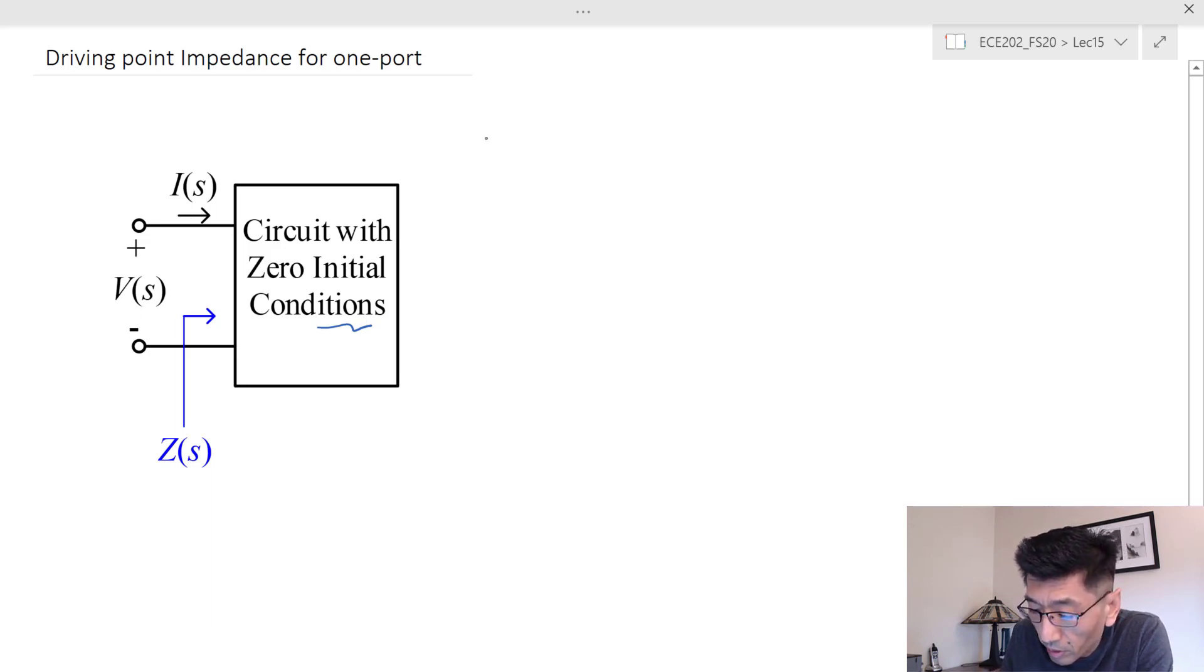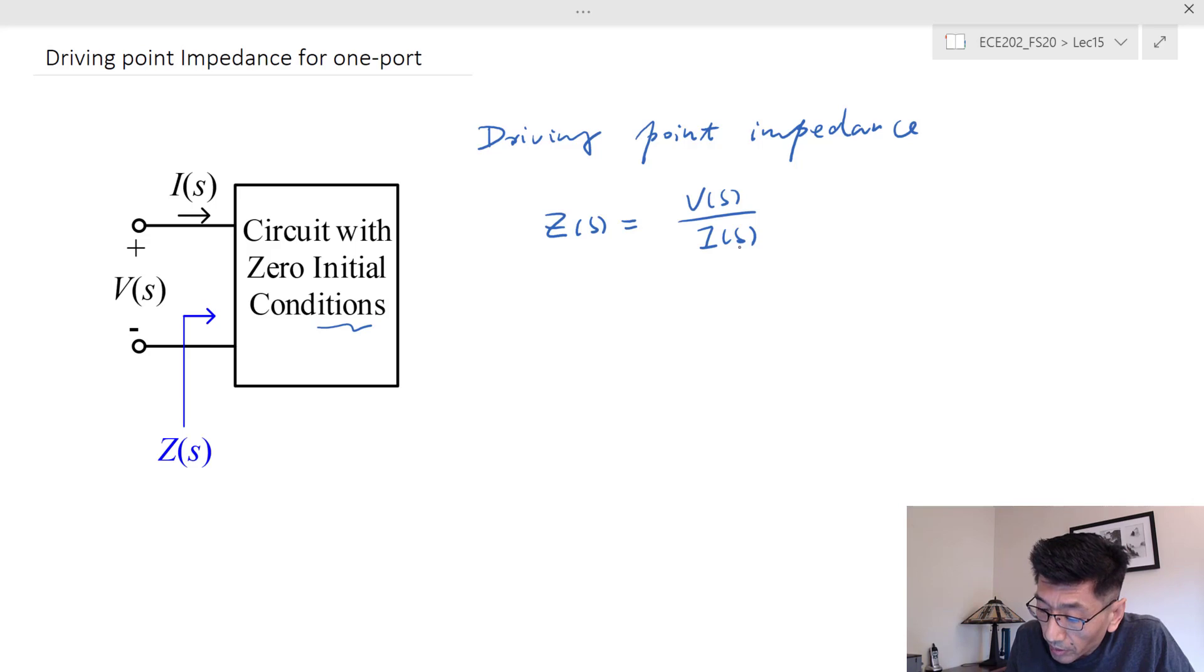The driving point impedance we use Z(s), Z(s) is just equal to V over I. So in this case, the driving point impedance is also known as...